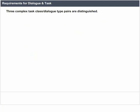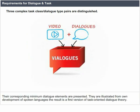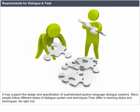Three complex task class or dialogue type pairs are distinguished, with their corresponding minimum dialogue elements presented. They are illustrated from the development of spoken language systems. The result is a first version of task-oriented dialogue theory, which may support the design and specification of sophisticated spoken language dialogue systems. Many people follow different styles of dialogue systems and techniques, differing in learning styles.